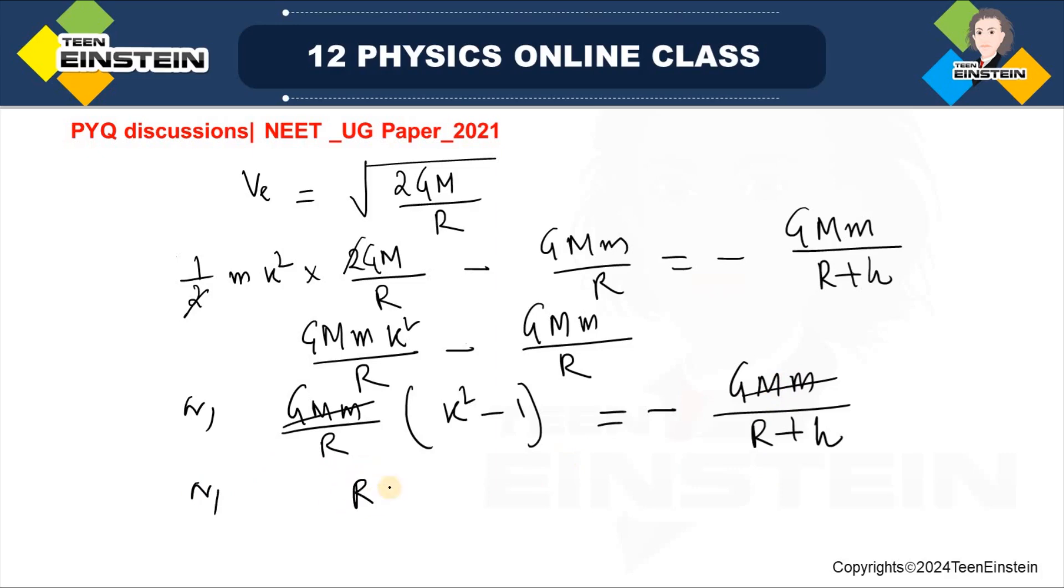Let us do further simplification. If you take GMm by R common from both sides, we get K square minus 1 on the left and GMm divided by R plus h on the right. This GMm can cancel out, and taking the reciprocal, R plus h equals R by K square minus 1.